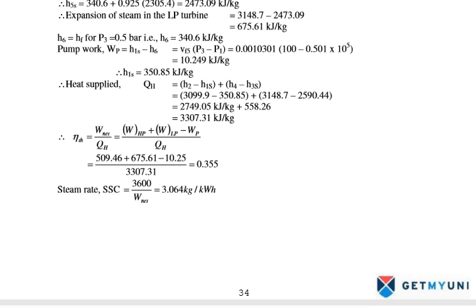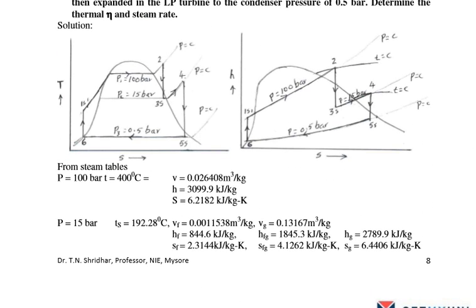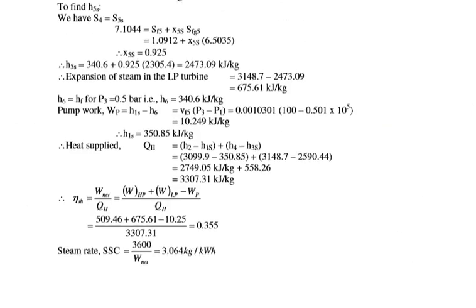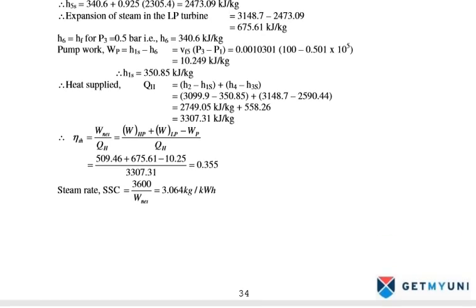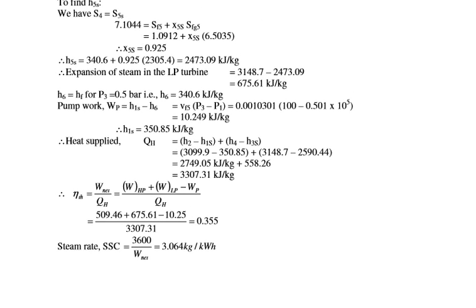Now find the heat supplied. Heat addition takes place from H1 to H2 in the boiler, and from H3 to H4 in the reheater. Applying the equation: QH = (H2 minus H1S) + (H4 minus H3S) = 3099.9 minus 350.85 plus 3148.7 minus 2590.44 = 3307.31 kJ per kg.